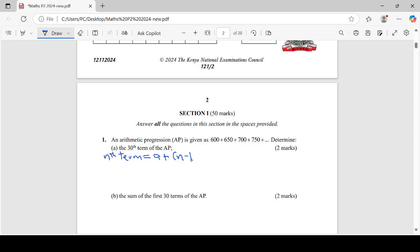To get the nth term of an AP we simply take a plus n minus 1 times d, whereby my a refers simply to the first term, my n refers to the number of terms, then finally my d refers to the common difference. So to get the 30th term I'm going to take a, our first term in this AP is 600.